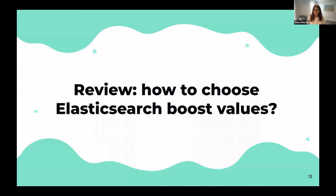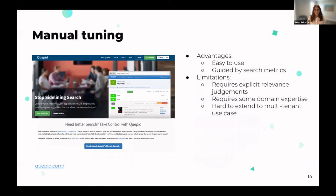Let's review some options for choosing Elasticsearch boost values. First, manual tuning — you could expose your algorithm via Quepid, have users rate some searches, calculate a search metric based on those ratings, and tweak things to make documents score higher. An advantage is that it's easy and guided by search metrics. Limitations are that it requires gathering explicit relevance judgments, the raters must have domain expertise, and it can be hard to extend to a multi-tenant use case.